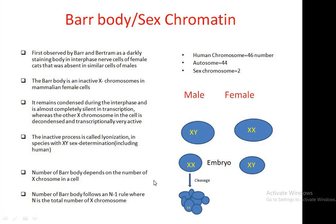Hello friends, welcome back to my channel Deep Biology. In this tutorial, you will learn about an important cytogenetic process that is the Barr body or sex chromatin. The Barr body was first observed by Barr and Bertram as a darkly staining body in interphase nuclei of female cats, which was absent in similar cells of males.